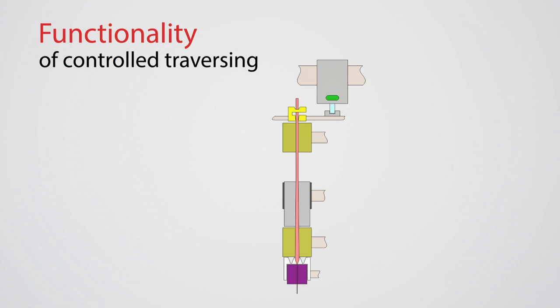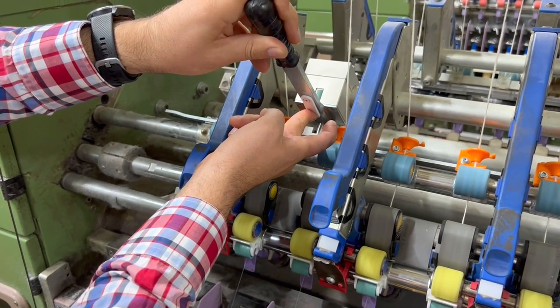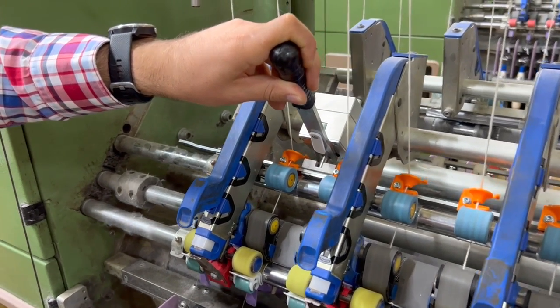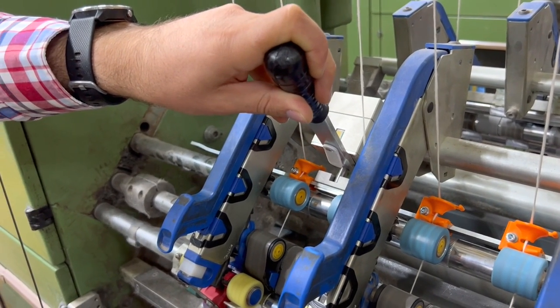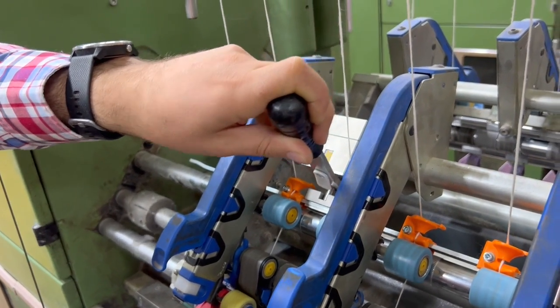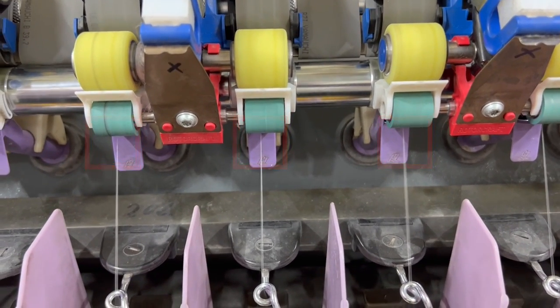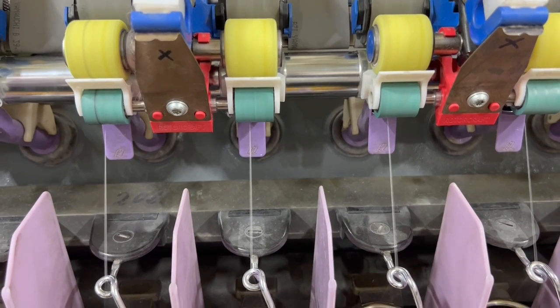The roving is running in the middle channel on the green setting. If the cycle in this channel is over, we can switch to the yellow setting. Therefore we use the tool to set the yellow position. You can see exactly how the roving is switching its path from the middle to the left channel.